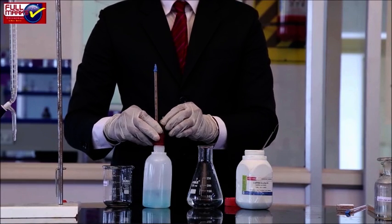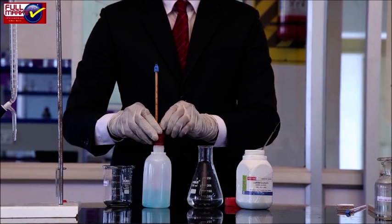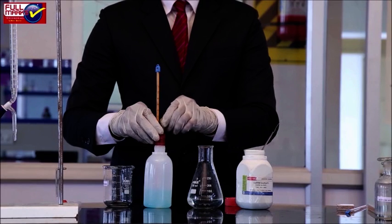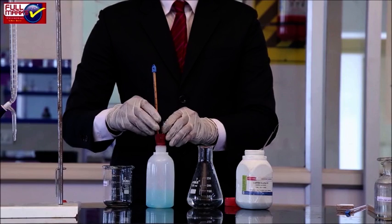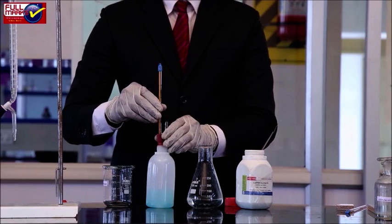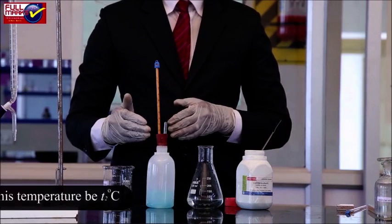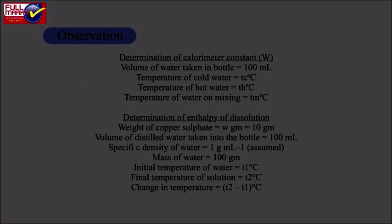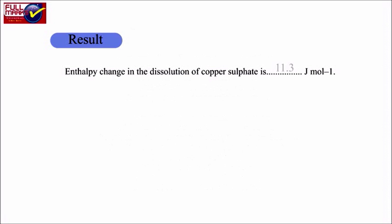The mixture is stirred thoroughly and its temperature is noted on complete dissolution of copper sulphate. Let this temperature be T2 degrees Celsius. Observations. Result: Enthalpy change in the dissolution of copper sulphate.